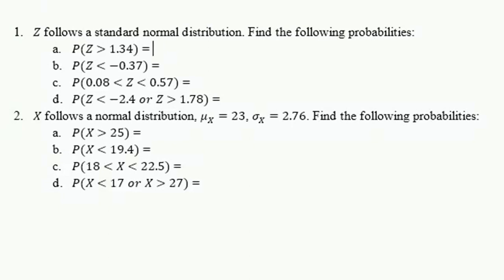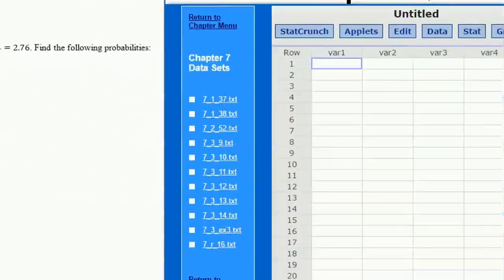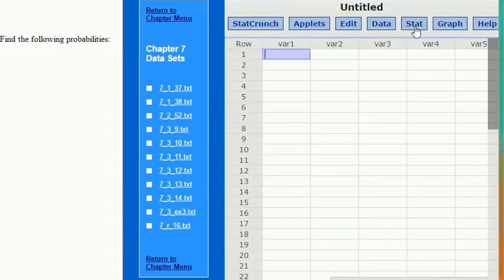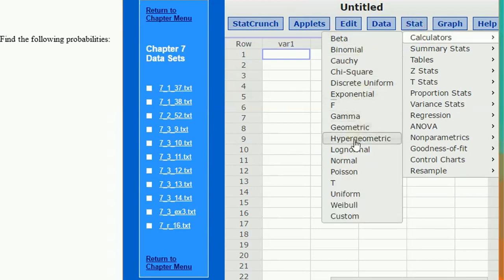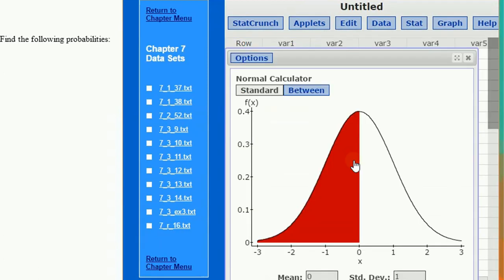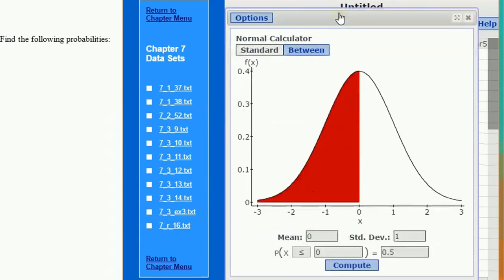You're interested in the probability that Z takes some value in some interval. Looking at the distribution of Z, in StatCrunch go under the Stat menu, click Calculators, and go down to the Normal Calculator.